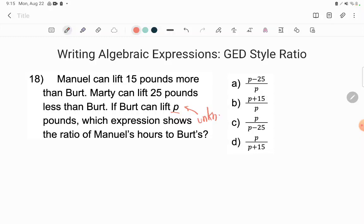Instead of knowing about Burt, we just have a letter, a variable to stand in for this unknown number of pounds that Burt can lift. And then it says, which expression shows the ratio of Manuel's hours to Burt's? Okay, as usual, first thing we should do when we're tackling a word problem is ask ourselves, what are they asking us to do or to find? I know too many of you guys who just like to start randomly doing stuff without paying attention to the question. Guys, we've got to be close readers.